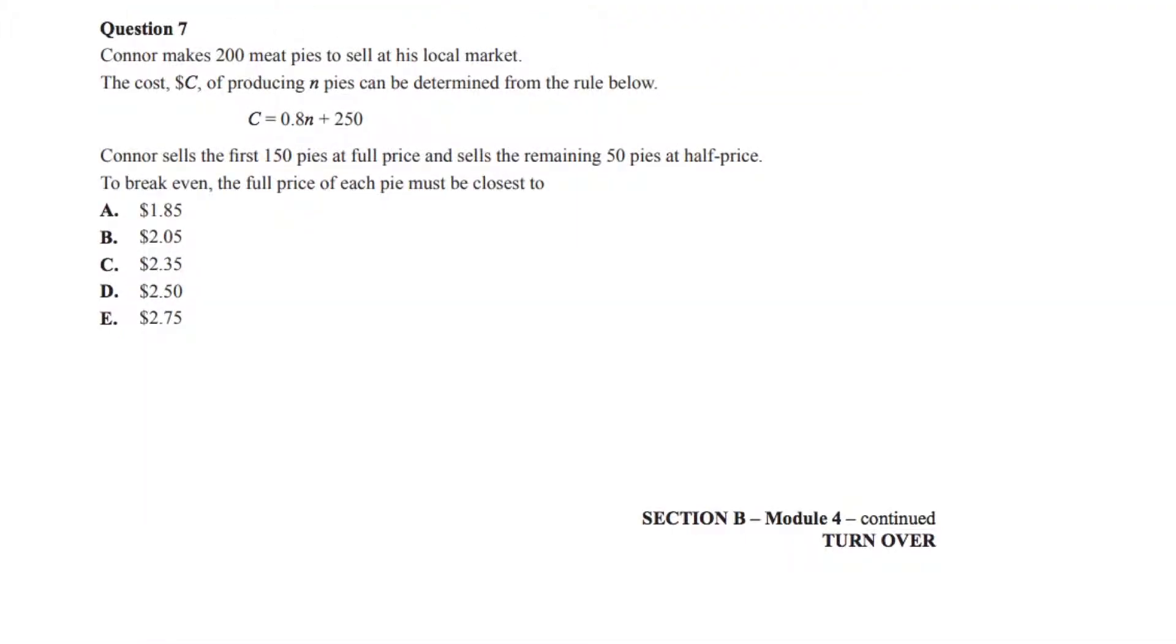Question 7. Connor makes 200 meat pies to sell at his local market. The cost C of producing N pies can be determined from the rule below. C equals 0.8N plus 250. Connor sells the first 150 pies at full price and sells the remaining 50 pies at half price.